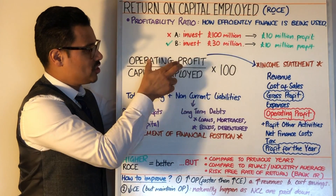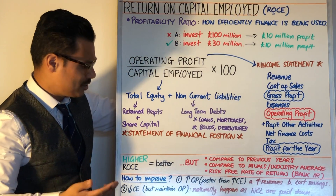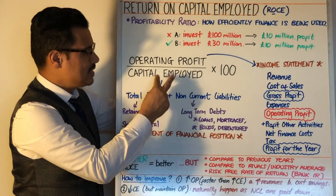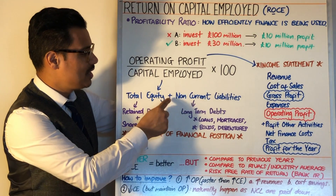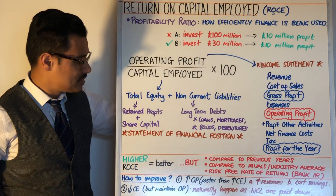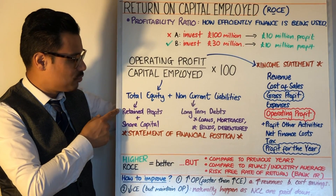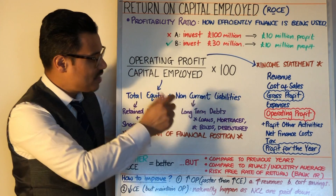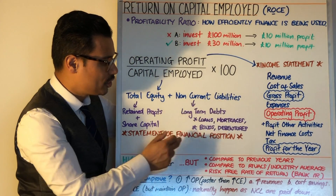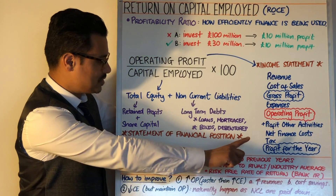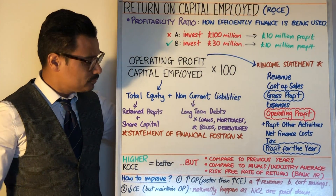Operating profit is in the income statement at the top — that's where you get it from. Capital employed, however, is not found in the income statement; you find it in the statement of financial position, or balance sheet. Capital employed has its own formula: total equity plus non-current liabilities — those long-term liabilities. Total equity is made up of retained profits or reserves plus share capital. Non-current long-term liabilities are essentially long-term debts: loans, mortgages, bonds, debentures — all found on the statement of financial position. Total equity is at the bottom, and non-current liabilities are slightly higher up that statement.